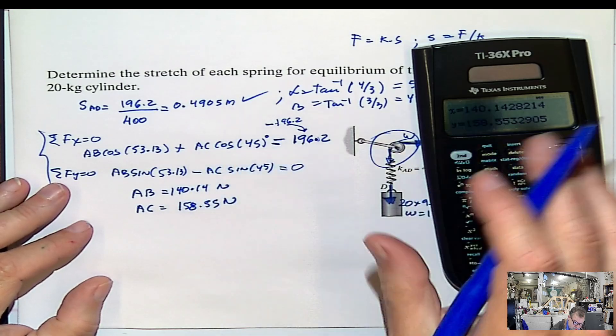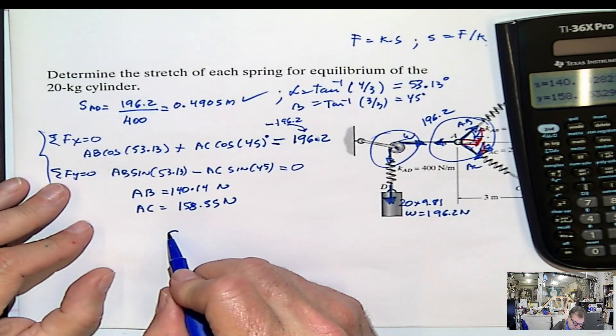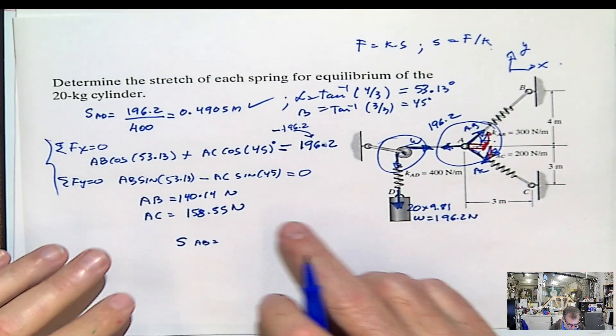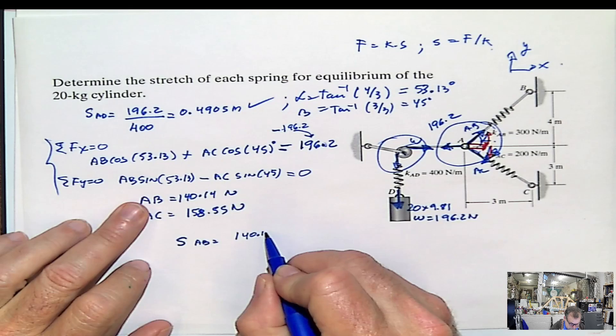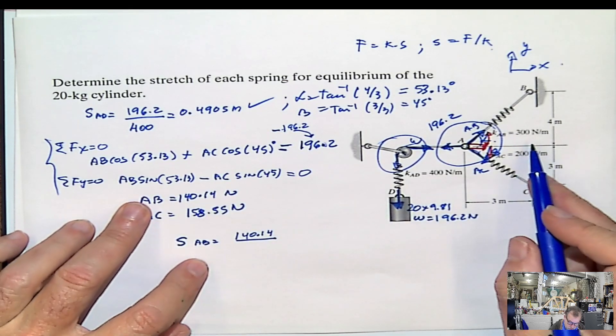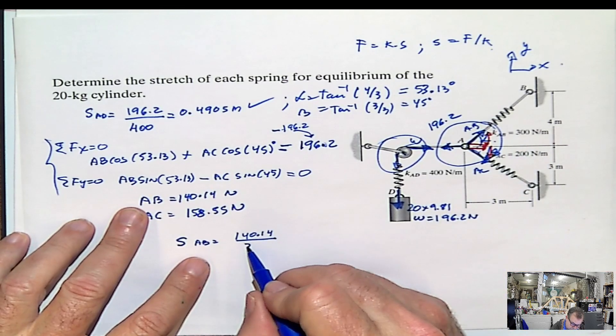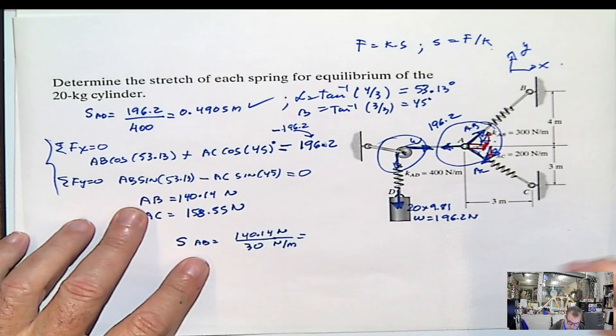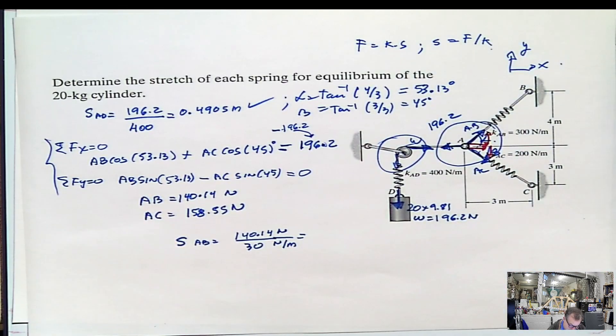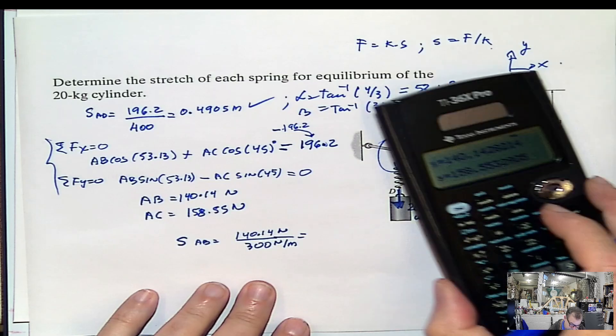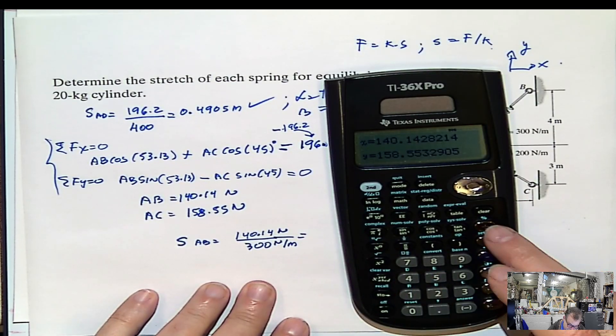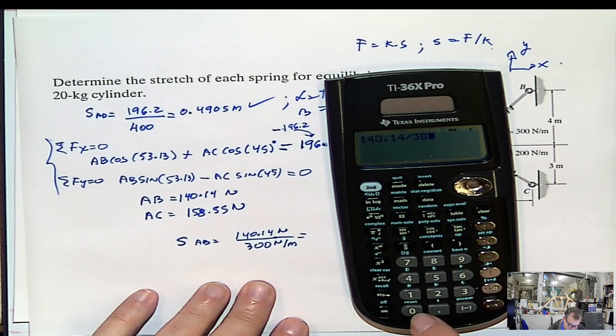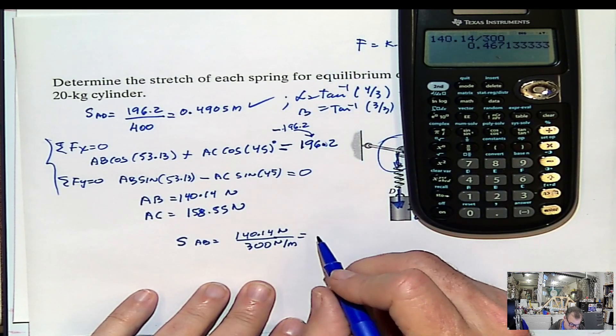Once we have that, we already got the stretching of this spring. If I want to calculate the stretching of the spring AB, it would be what? It would be the force divided by the constant AB, 300. Remember, this is newton, and this is newton over meter. Coherent units here all the time, please. So, 140 divided by 300, 140.14 divided by 300 is 0.467 meters.